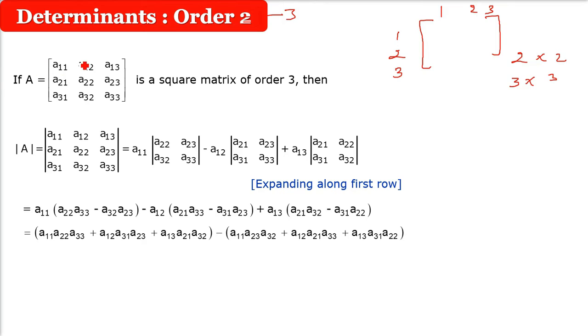See, in a 3 by 3 matrix, we have 1, 2, 3. This is 3 rows and 3 columns. So whenever this a11 will come, what is this? 11. So 1 plus 1 is 2. So whenever we expand, minus 1 to the power i plus j, that sign we will put.